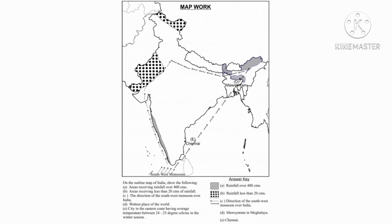Next, the areas receiving rainfall above 400 cm. The southwest part of India and northeast part of India. Identify the places — southwest part of India and northeast part of India. That means the areas receiving over 400 cm rainfall are Arunachal Pradesh and Meghalaya.